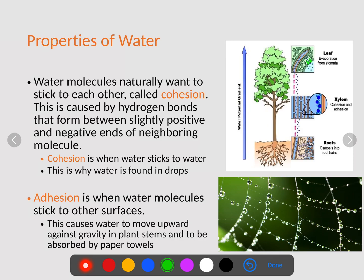Now another property of water that we have is that water molecules naturally want to stick to each other because of these hydrogen bonds. So when water sticks to other water, we call this cohesion. This is caused by those hydrogen bonds that form between slightly positive and slightly negative ends of neighboring molecules. So cohesion is when water sticks to water, which is why you find these water droplets that attach to the spider web.